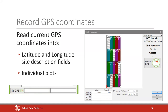GPS coordinates — we hinted at them for individual plots — you can also record them for your trial corners in the site description. The trial map is shown on screen and you can walk to each corner, press a button, and it reads the device's location and puts it into the site description values.